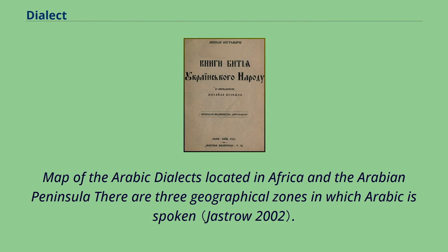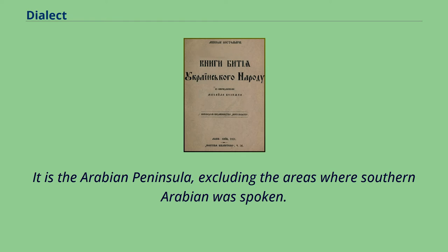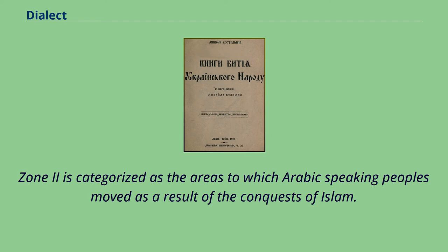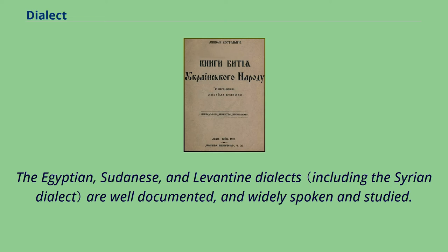There are three geographical zones in which Arabic is spoken. Zone I is categorized as the area in which Arabic was spoken before the rise of Islam — the Arabian Peninsula, excluding areas where Southern Arabian was spoken. Zone II comprises areas to which Arabic-speaking peoples moved as a result of the conquests of Islam, including the Levant, Egypt, North Africa, Iraq, and some parts of Iran. The Egyptian, Sudanese, and Levantine dialects are well documented, and widely spoken and studied.